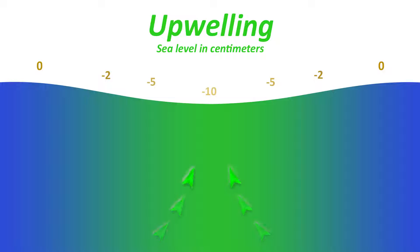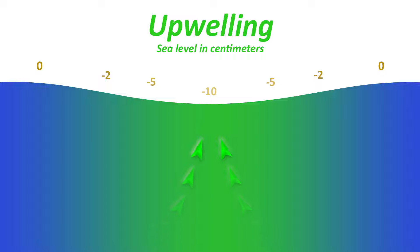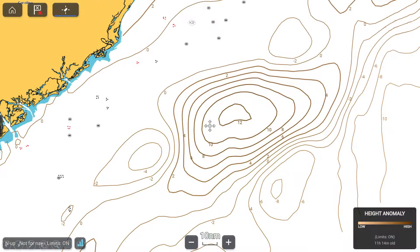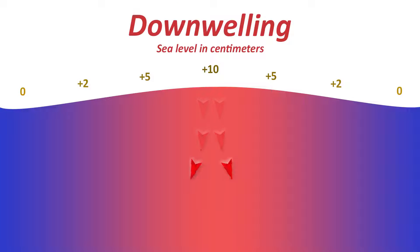Upwelling locations are areas of the ocean below the average sea level that indicate where the level is rising. These areas create favorable conditions for attracting bait and game fish as they often bring nutrient-rich water up from below. Conversely, downwelling locations are areas above average sea level where the height is falling. These are often nutrient poor and don't support favorable fishing conditions.